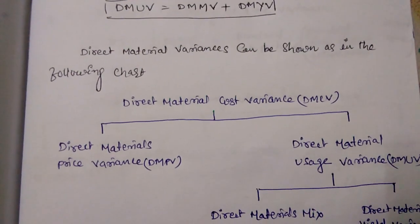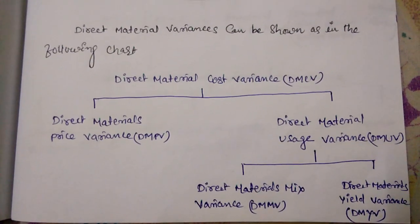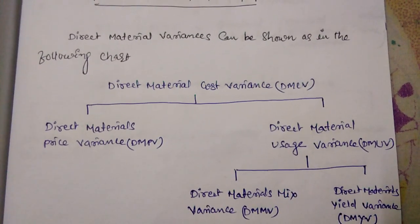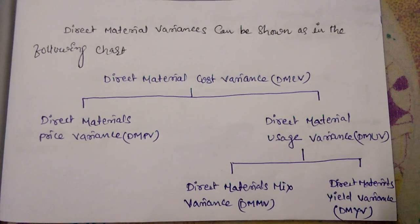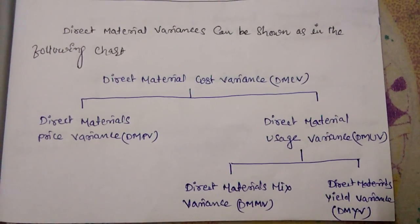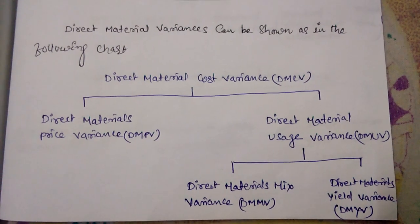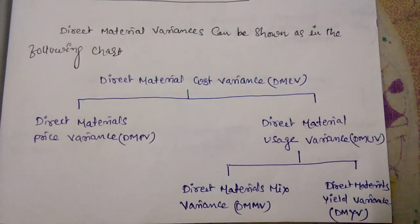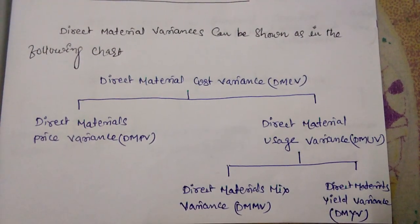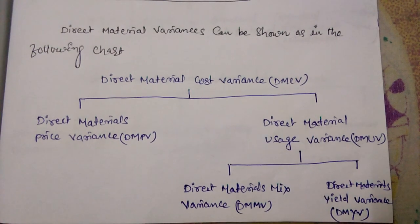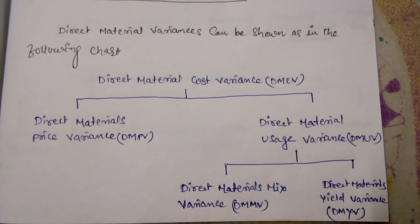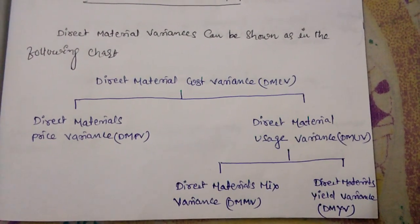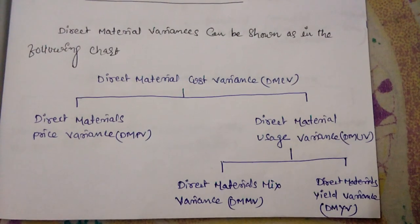Direct material variances can be shown in the following chart. Direct Material Cost Variance (DMCV) is divided into two parts: Direct Material Price Variance (DMPV) and Direct Material Usage Variance (DMUV). DMUV is further divided into Direct Material Mix Variance (DMMV) and Direct Material Yield Variance (DMYV).